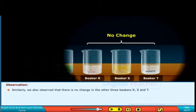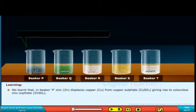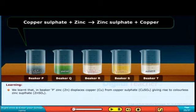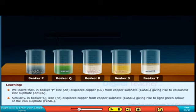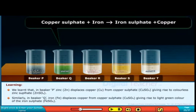Similarly, we observe that there is no change in the three beakers R, S and T. In beaker P, zinc displaces copper from copper sulphate, giving rise to colourless zinc sulphate solution, since zinc is more reactive than copper. In beaker Q, iron displaces copper from copper sulphate, giving rise to the light green colour of iron sulphate, because iron is more reactive than copper.